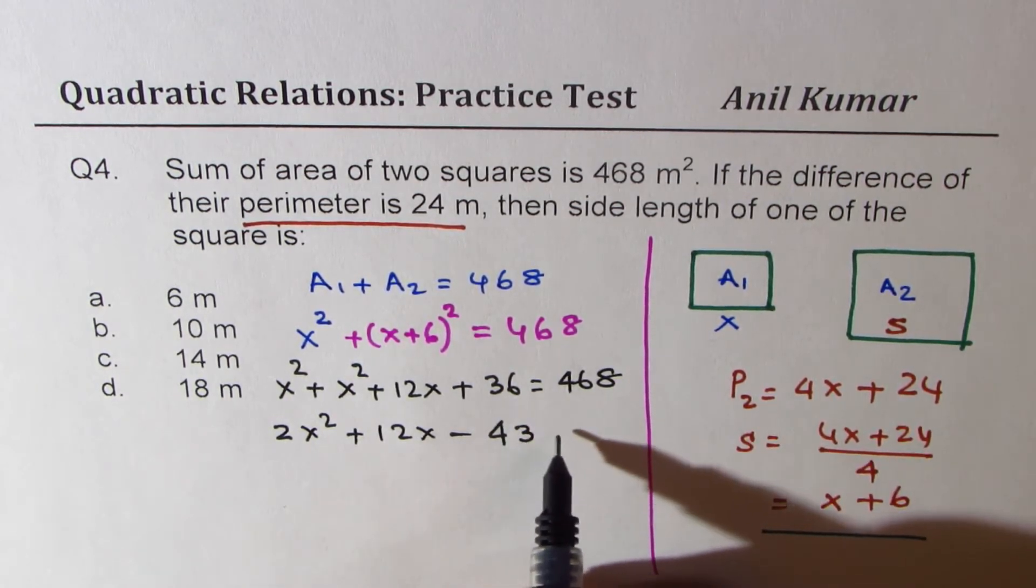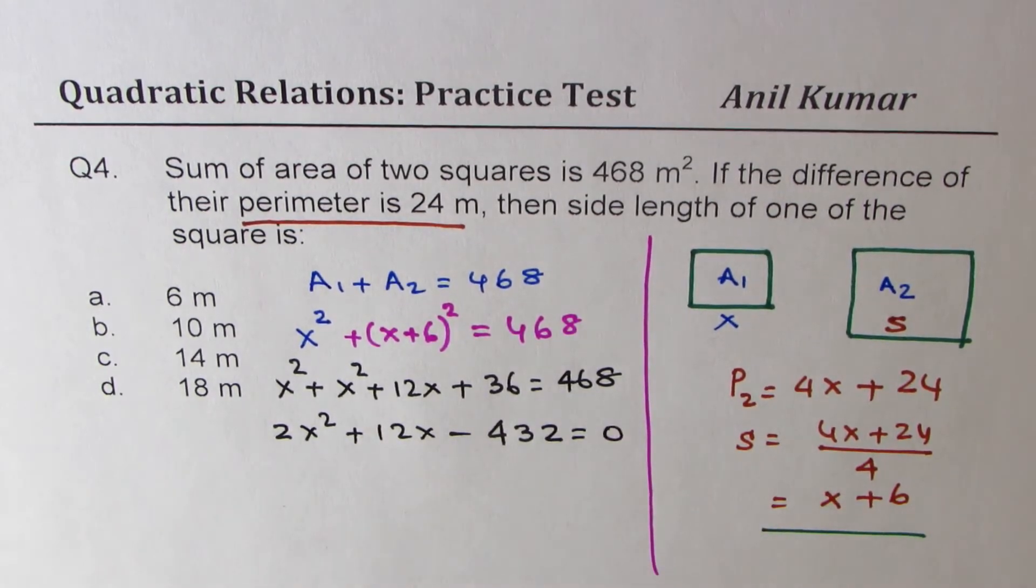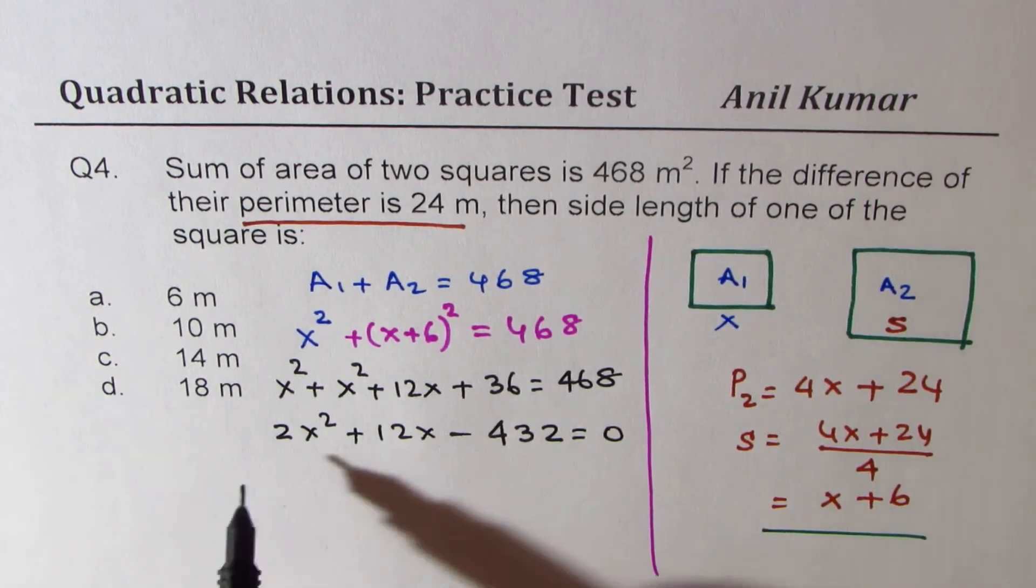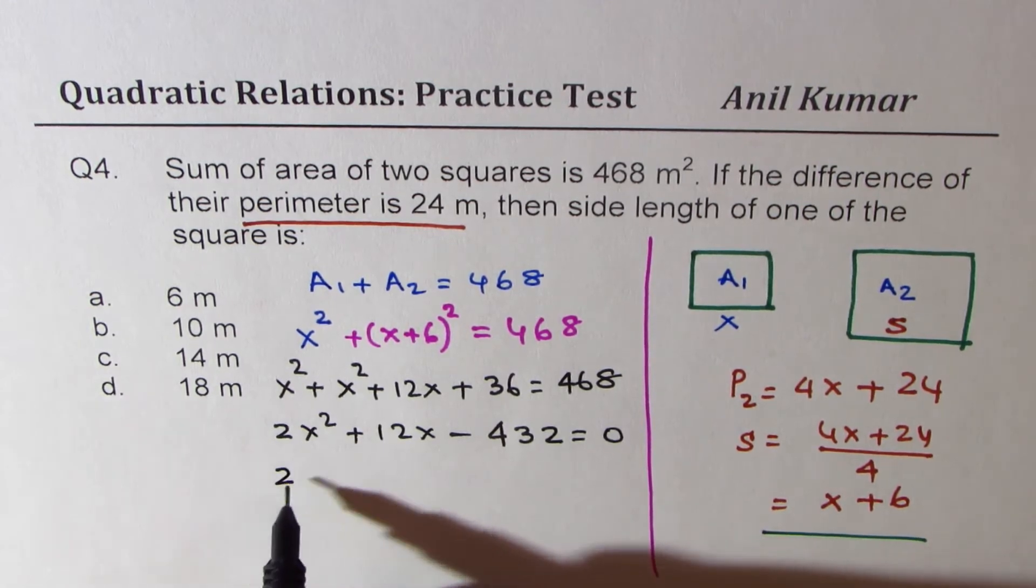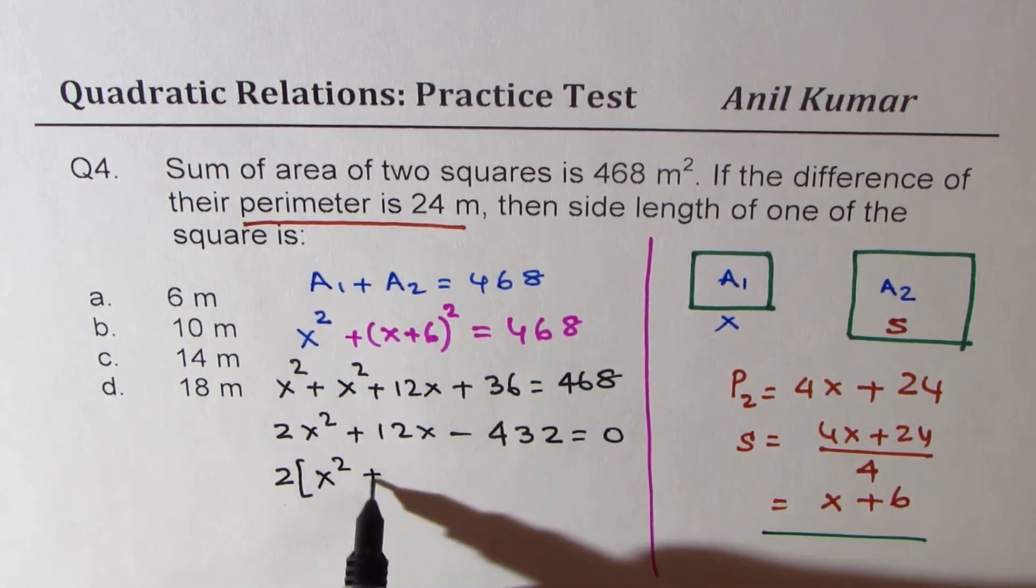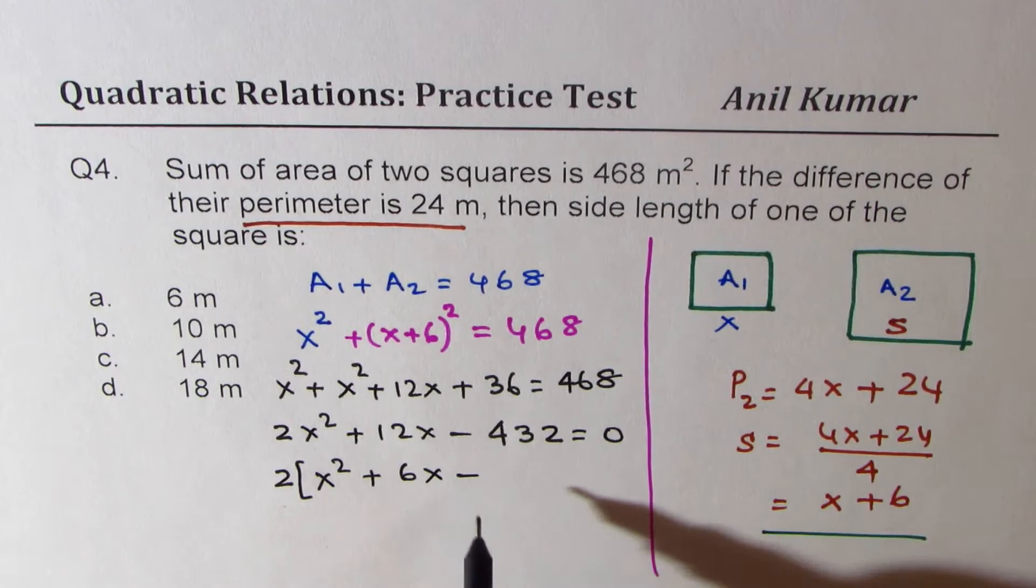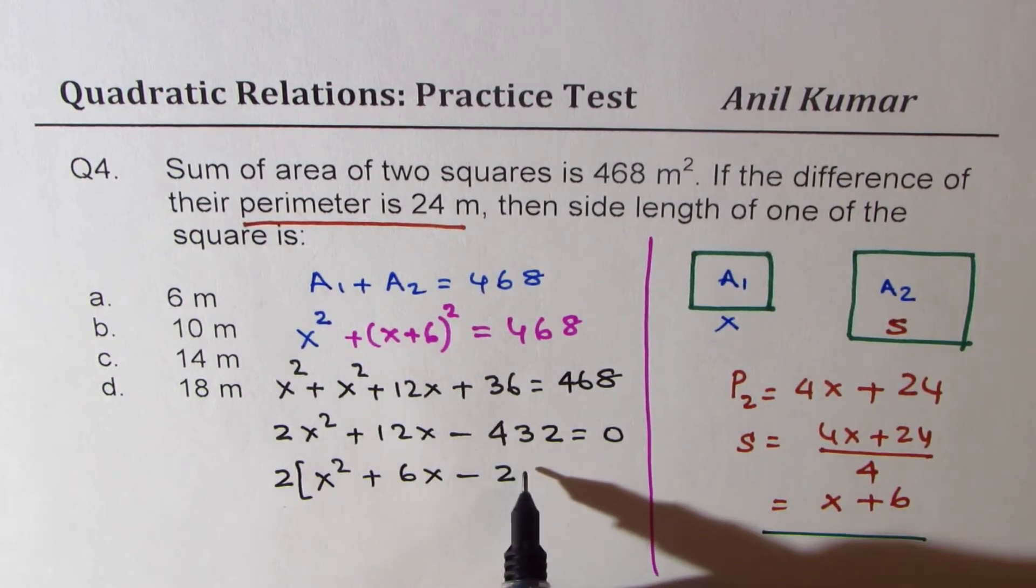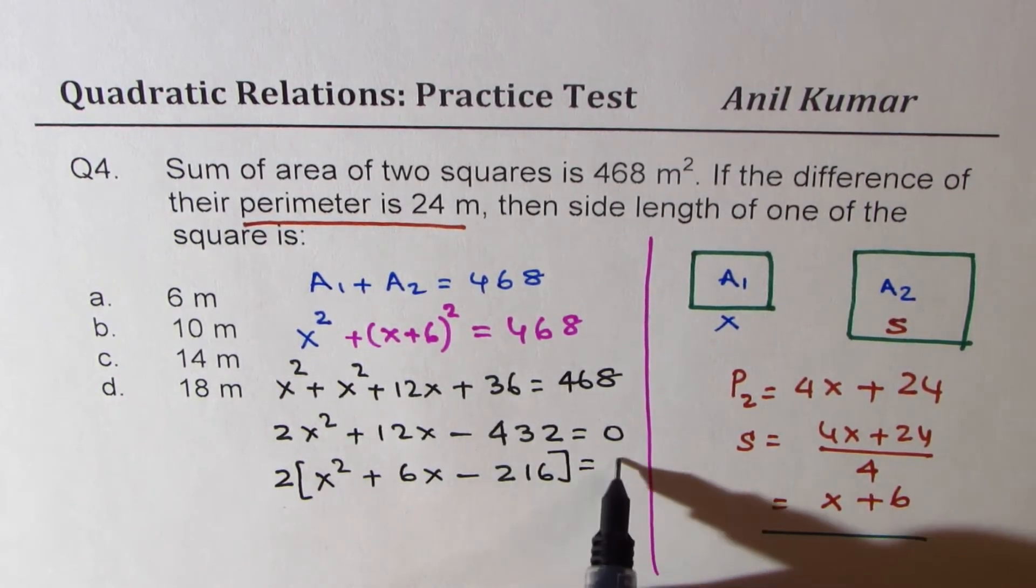So we get 468 minus 36. So that becomes 432 equals to 0. Now we could factor out 2. So if I factor out 2, I get x square plus 6x minus 216 equals to 0.